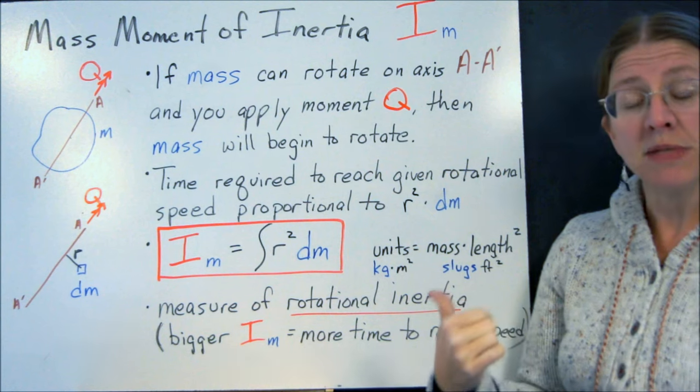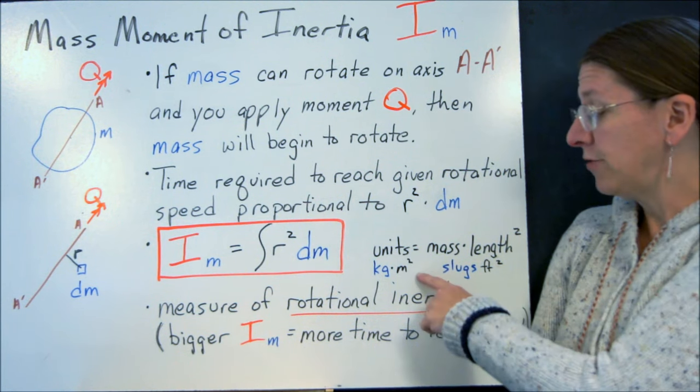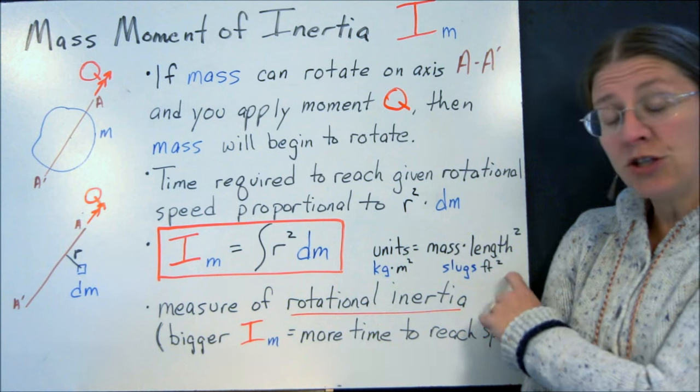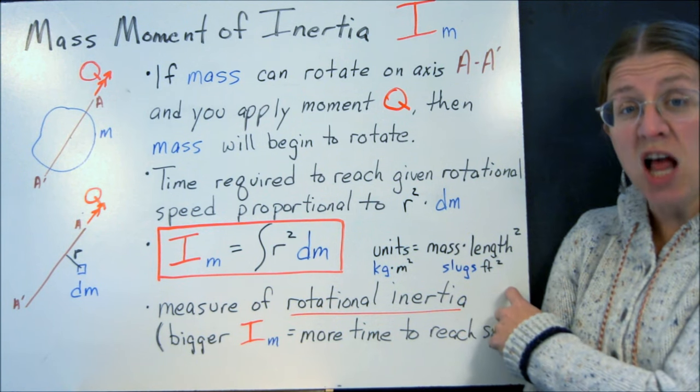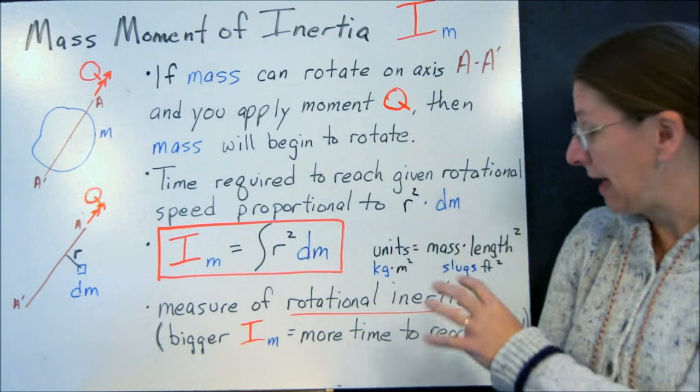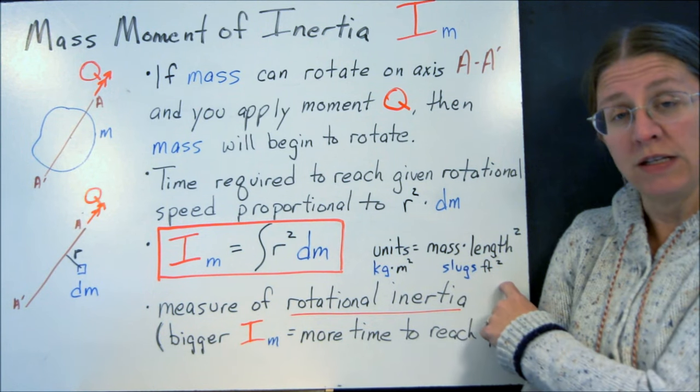Its units are mass times length squared. So in metric units, that's kilograms meter squared. In English units, remember that mass is given in slugs. So if you have pounds, you have to divide that to get out slugs feet squared.